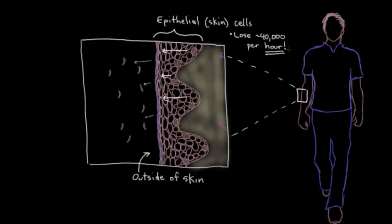So you shed them and you lose almost 40,000 of them per hour. So if we want to have any hope of keeping our skin, we kind of need a way to replace these cells. And that's where stem cells that live in our skin come in.